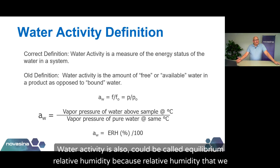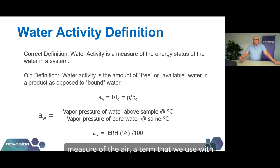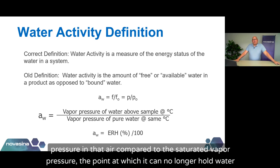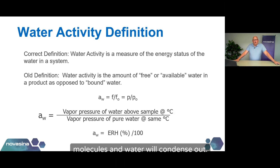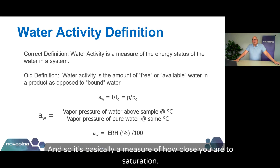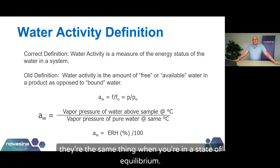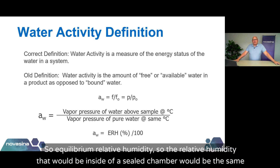Water activity is a measure of the energy status of water in a system — the chemical potential energy averaged across all water molecules. That's important because thermodynamics dictates whether things happen spontaneously and energetically. What that water activity — that energy of water — is will have an impact on all kinds of things happening in the product. Water activity could also be called equilibrium relative humidity, because relative humidity measures the relative vapor pressure in the air compared to the saturated vapor pressure. That's the same measurement as water activity when you're in a state of equilibrium. The relative humidity inside a sealed chamber is the same thing as water activity.